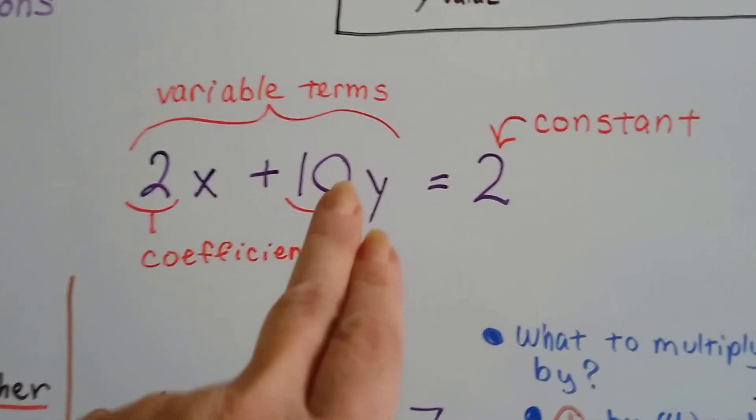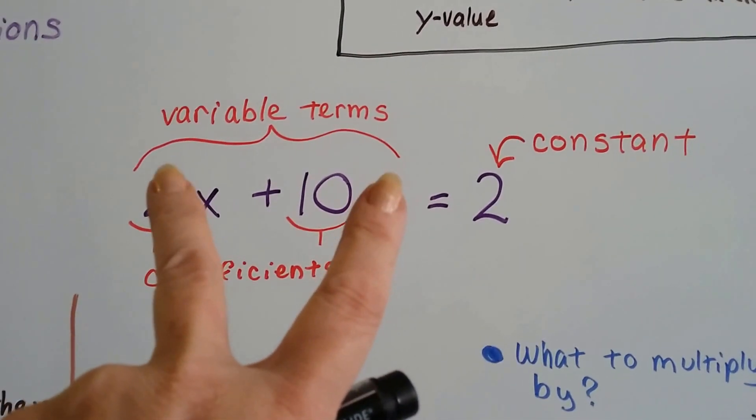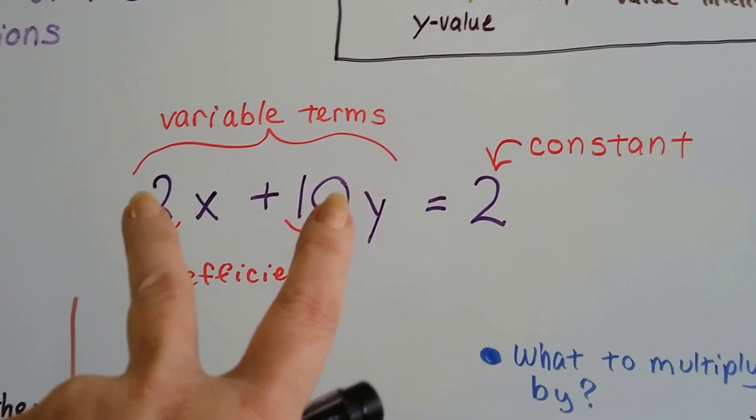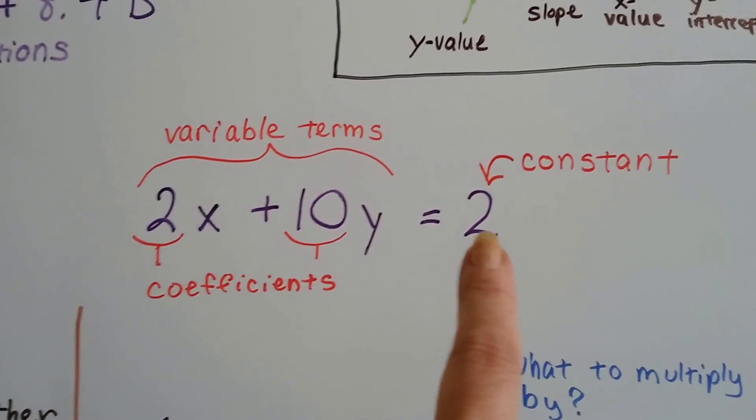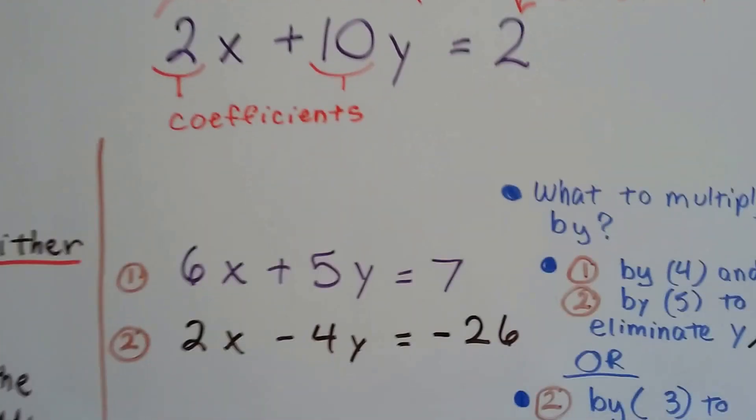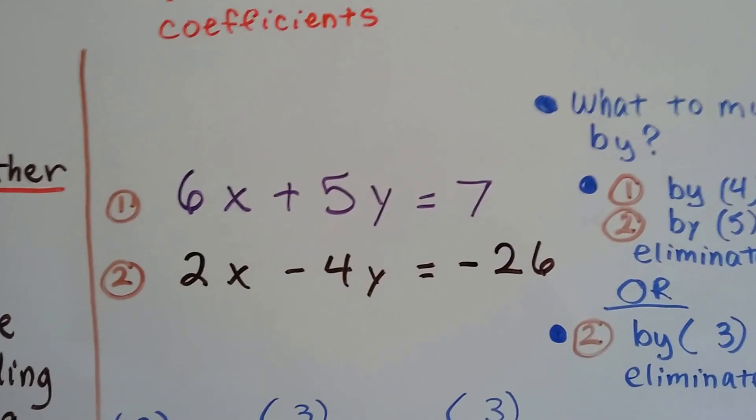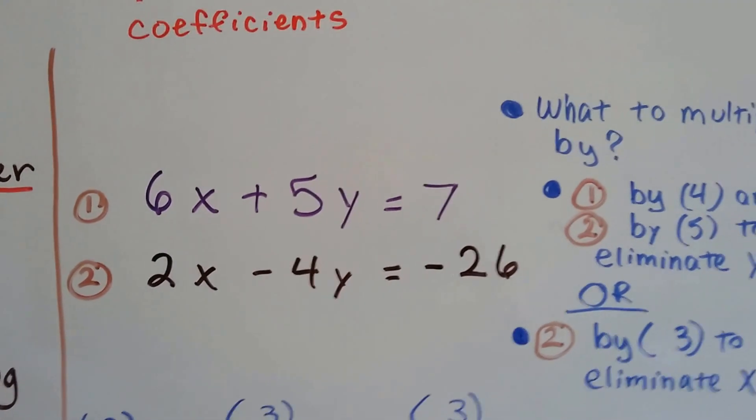This is a term, this is a term, and this is a term. These are variable terms because they have variables in them. The coefficients are the numbers that are in front of the variables. That's a constant term, that's a constant number. It's not going to change, it doesn't have a variable with it. So here's our system of equations. We've got 6x plus 5y equals 7, and 2x minus 4y equals negative 26 as the second equation.